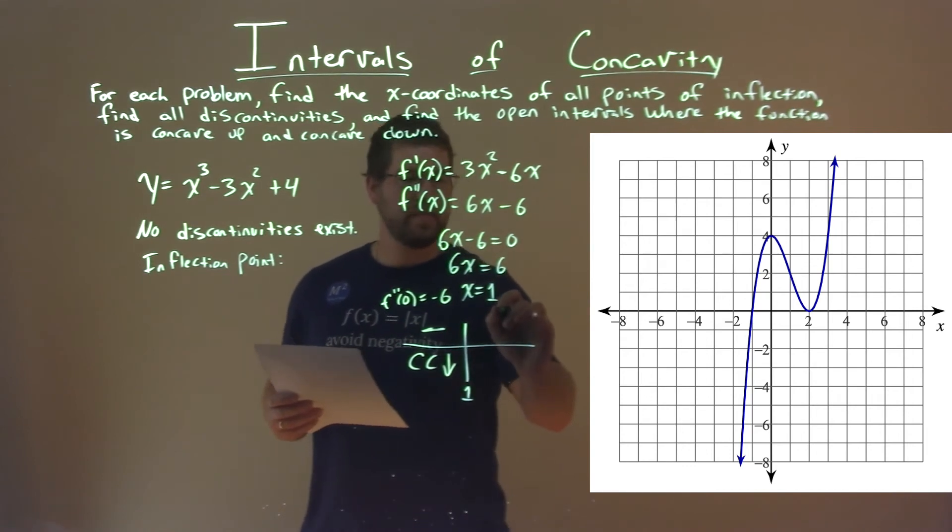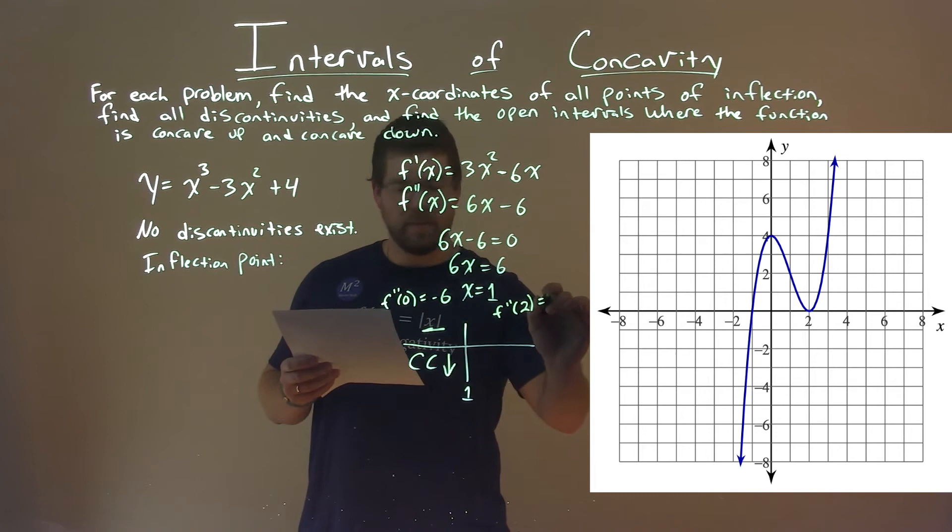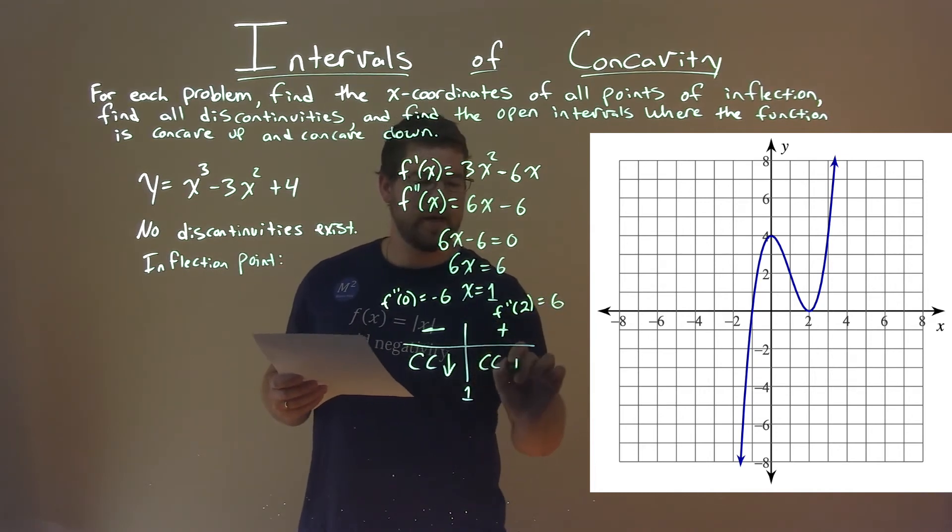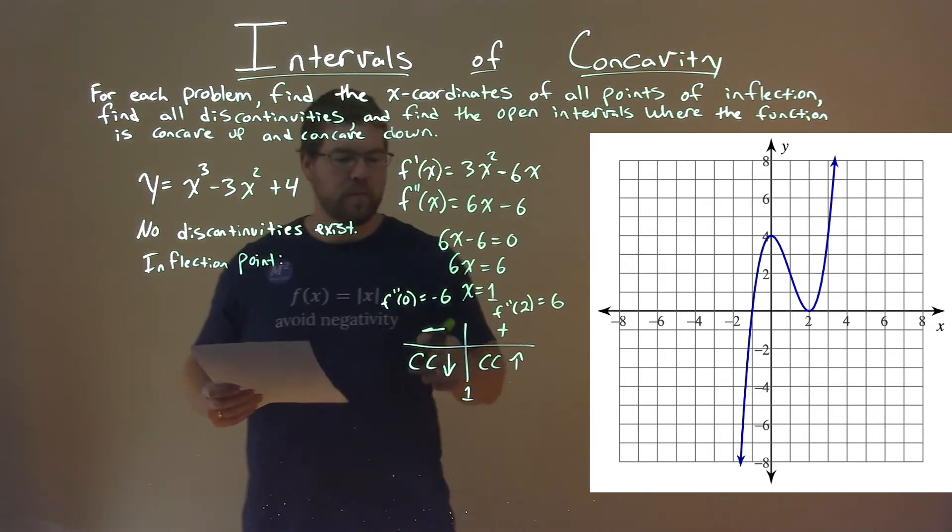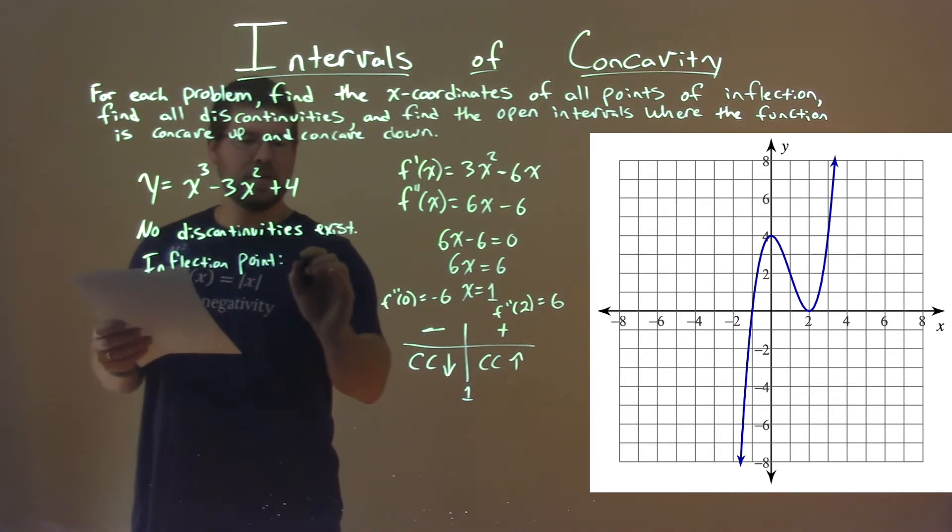f''(x) of a value greater than 1, I picked 2, and that's positive 6. And it's positive, meaning we're concave up. So, our point of inflection, we change concavity, is x equals 1.